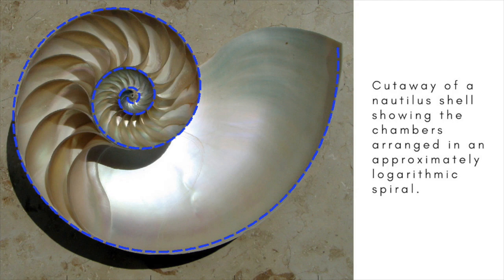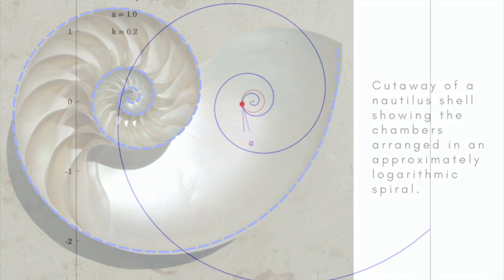The logarithmic spiral is an example of a transcendental plane curve.